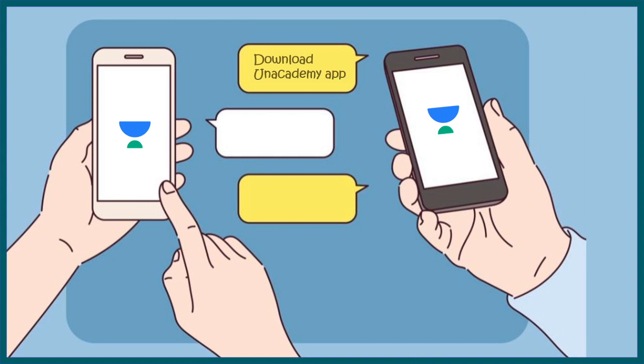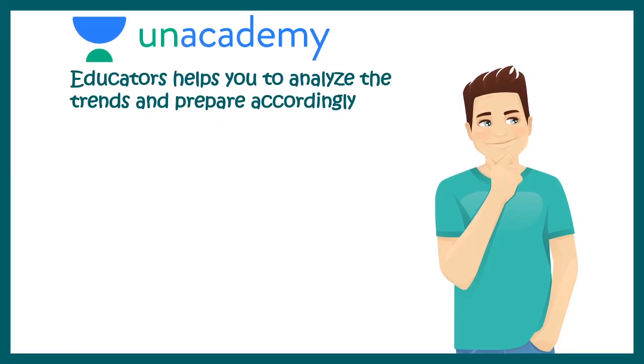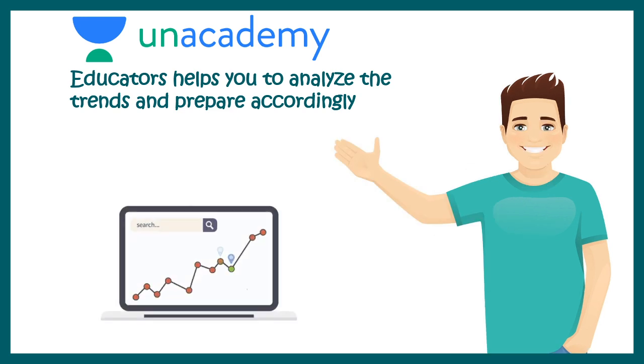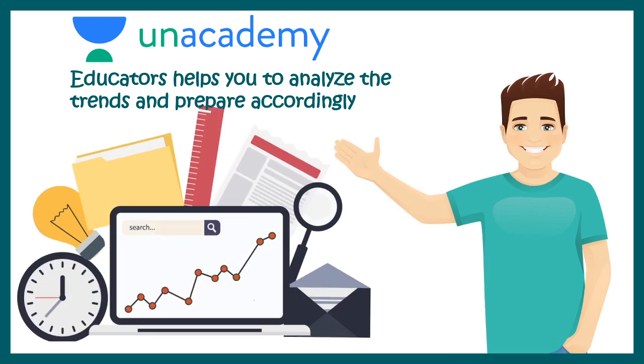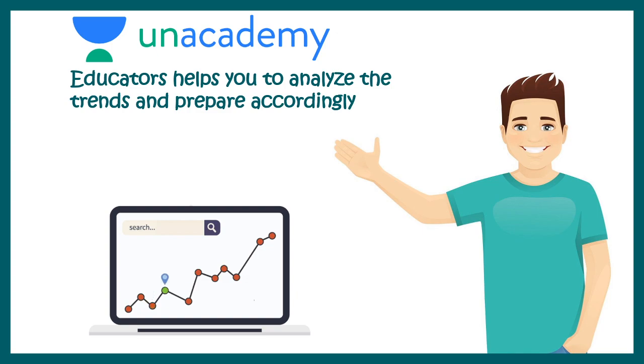This would be a 90 days crash course for JAM 2022. If you are really interested, then don't forget to subscribe to Unacademy using my code AP10. So download the Unacademy app, click on the link in the description, and then you can use my code AP10 to get the subscription. You can get 10% off with this code. Educators in Unacademy help you analyze trends and prepare accordingly.